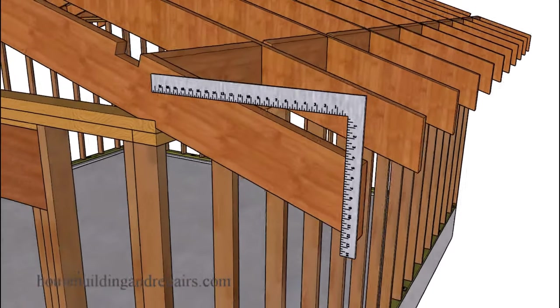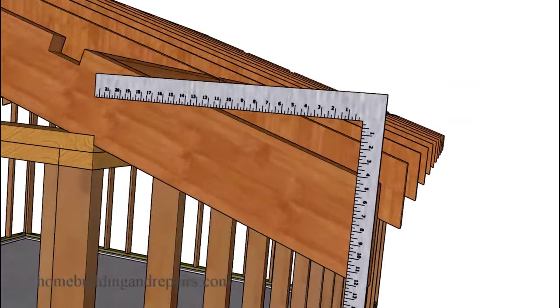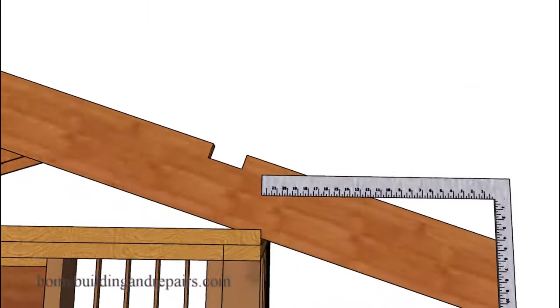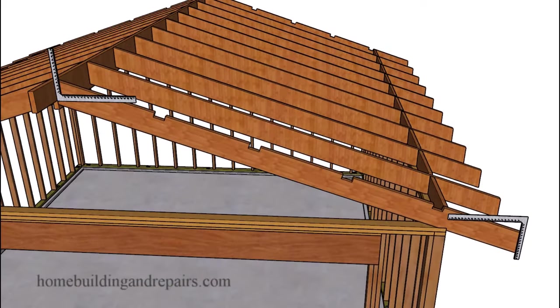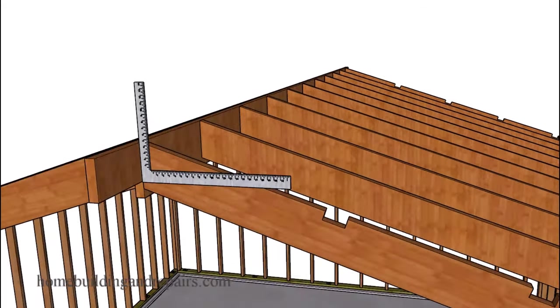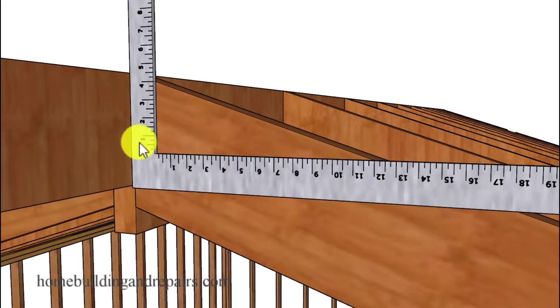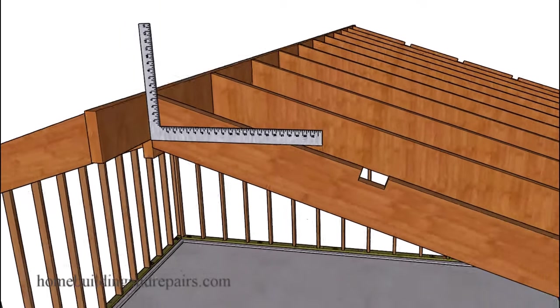And sometimes even flip the framing square over to lay out other angles also. And you can see here where this position is going to work better than this position here for the plumb cut angle at the top of the roof rafter. So again, we're just lining up the 4 and the 12 here and flipping the framing square over.